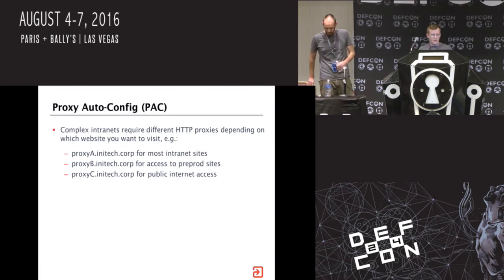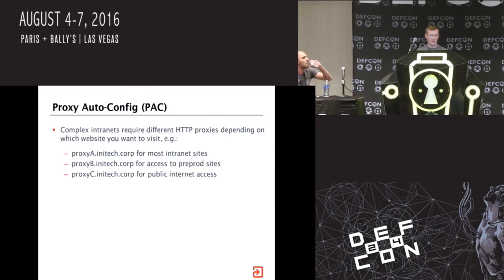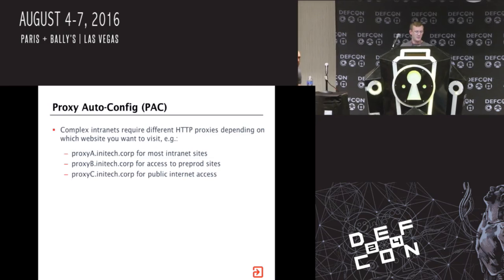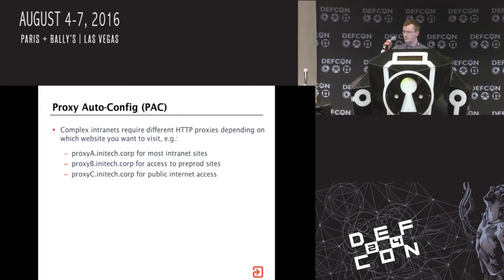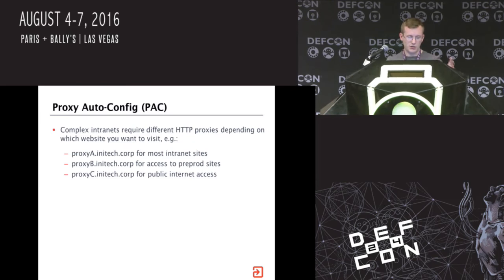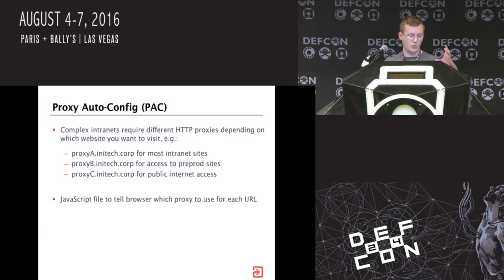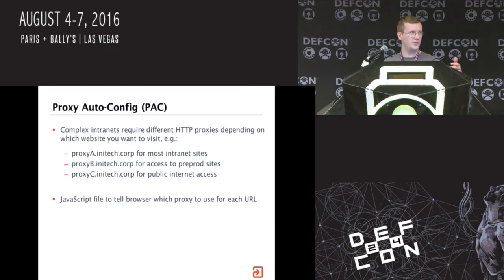Hello. Alex has given you a bit of history and I'm going to give you a little bit more. Just to introduce PAC files for people who haven't heard about them before. PAC files exist because large companies have very complex internal networks, lots of different proxies, and they need some way to figure out which proxy to connect to depending on the site you want to visit. A PAC file is simply a small bit of JavaScript - the browser asks the JavaScript 'I want to visit this URL' and the JavaScript figures out which proxy to use, returning a proxy as a string. This was invented in 1996 by Netscape.